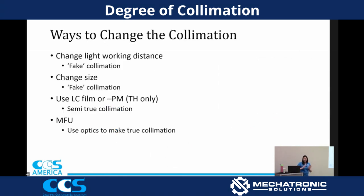What I just described — ways to change collimation by adjusting light size or working distance — is kind of a 'fake' collimation, if you will. Technically you're changing the angle at which the light hits the sample, but you're not making the light any more or less parallel. We call it fake collimation because it's solving the problem, but not in the same way that true collimation does.